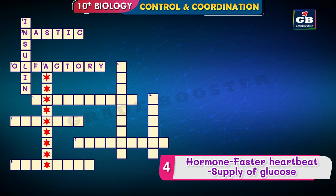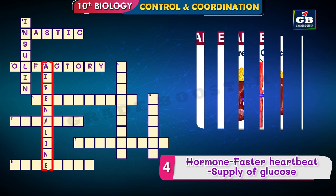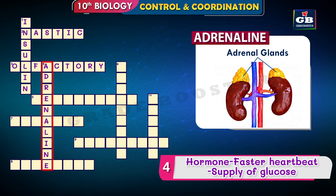The answer is adrenaline. Adrenaline is the fight-or-flight hormone that is secreted by adrenal glands present on the kidneys.